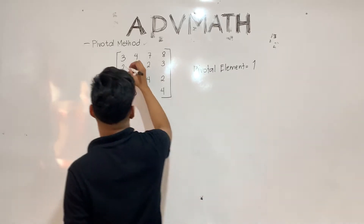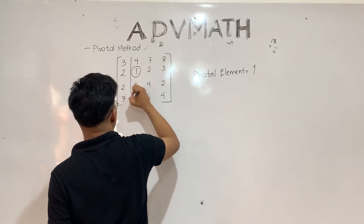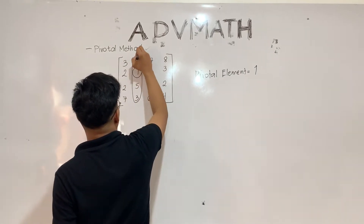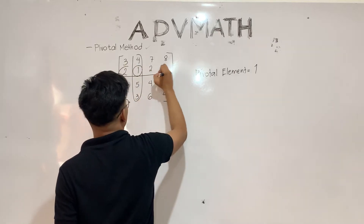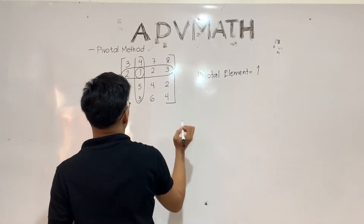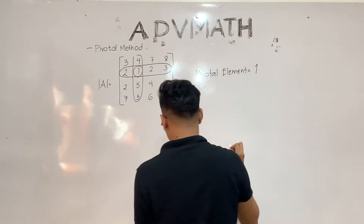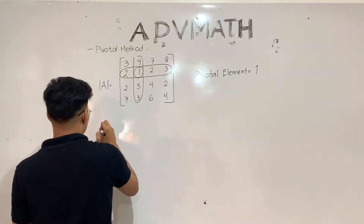Upon choosing the pivotal element, we need to cross out the row and column where it is located. Thus, from a 4 by 4 matrix, it will become a 3 by 3 matrix.